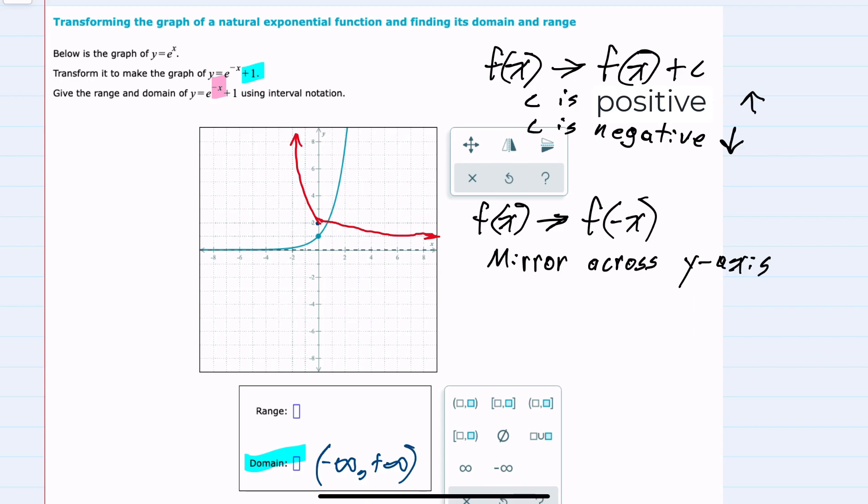Our range, however, is going to be all of our possible y values. But we can see that it's approaching the line y equals 1 as an asymptote. So our y value could never be as low as 1. Our possible y values would be all y values greater than 1. So not including 1, that 1 is non-inclusive, and it would continue to go up all the way to positive infinity.